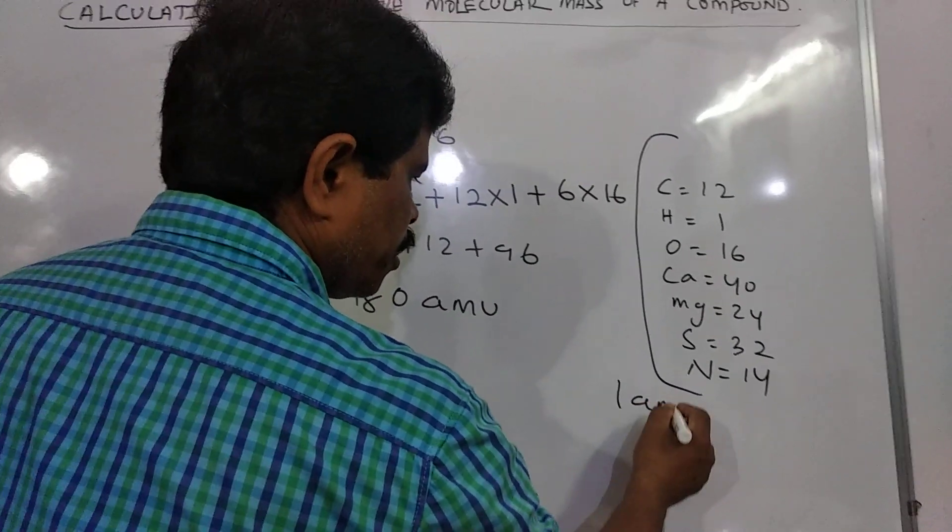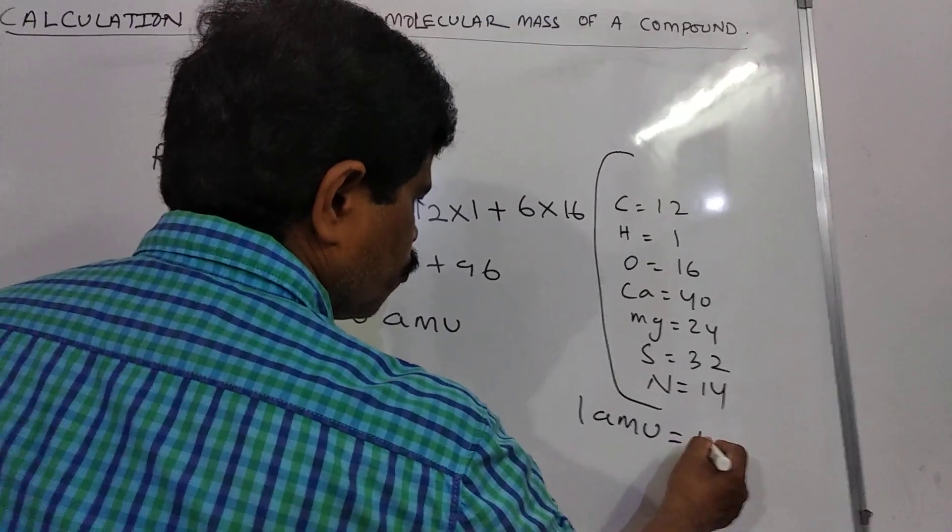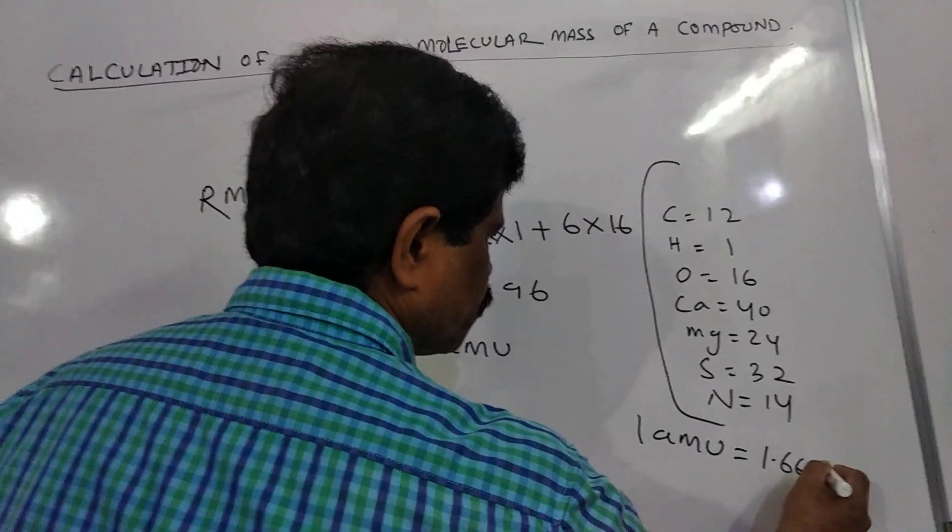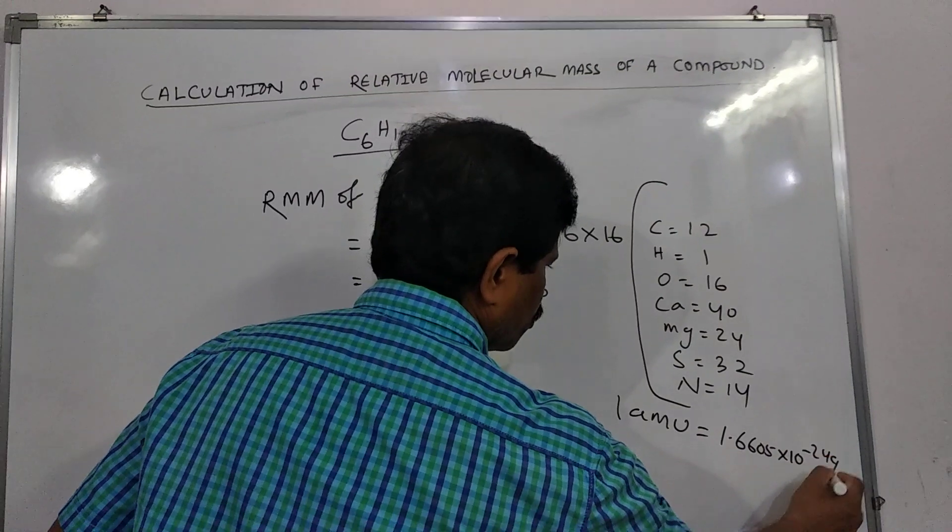1 amu is equal to 1.6605 into 10 to the power minus 24 gram.